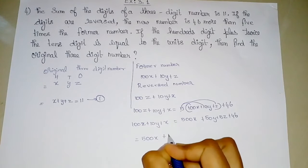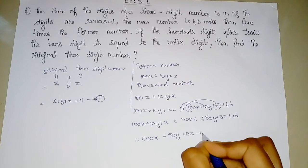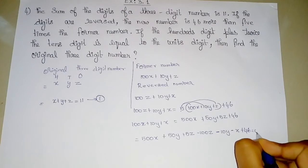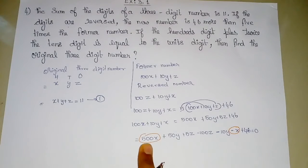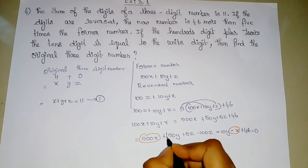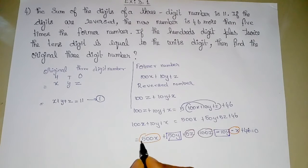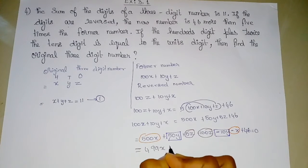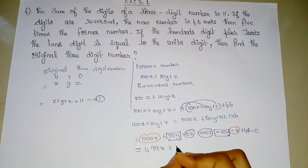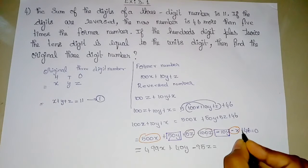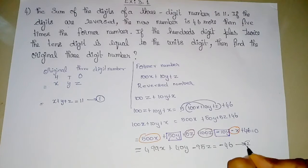Rearranging: 500X plus 50Y plus 5Z minus 100Z minus 10Y minus X plus 46 equals 0. Collecting like terms gives 499X plus 40Y minus 95Z equals minus 46. This is Equation number 2.